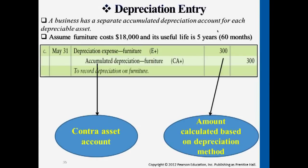Let's look at an example. Assume there's a piece of furniture that costs $18,000, and we estimate it can be used in the business for five years — that's about 60 months. If we want to measure one month of depreciation for a monthly statement, that would be $18,000 divided by 60, which equals $300. To record that the business has been using this furniture for the month, we debit depreciation expense and credit accumulated depreciation for furniture.